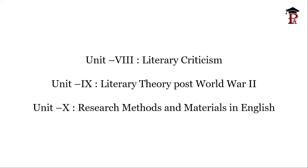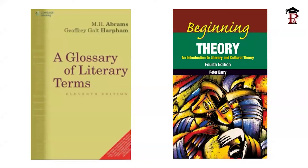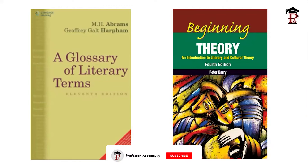The last unit is Research Methods and Materials in English. For this unit, study the MLA Handbook. For Units 8 and 9, two key books to use are: first, M.H. Abrams' Glossary of Literary Terms, which talks about all literary forms and terms — if you are a beginner, start with this book. Second is Peter Barry's Beginning Theory, which discusses theories from Structuralism onward in detailed explanation.